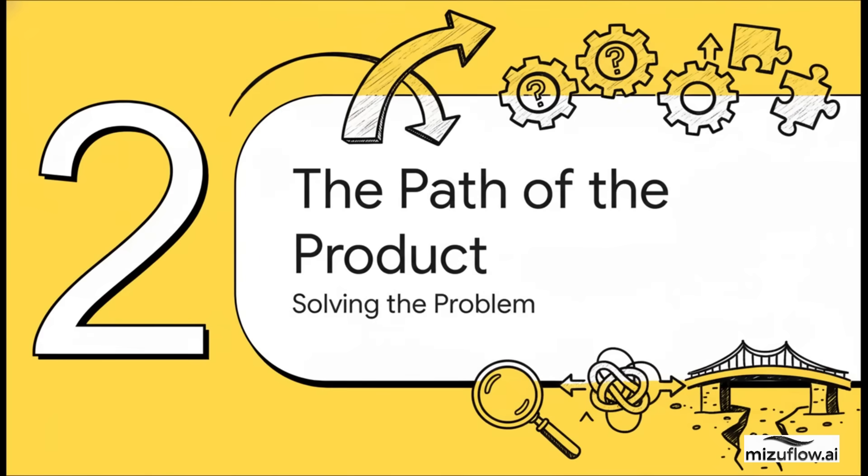Well, that brings us to our second path, the path of the product. This is what happens when you're not just asked a simple one-off question. This is when you're faced with a complex, ongoing business problem that actually needs a permanent solution.